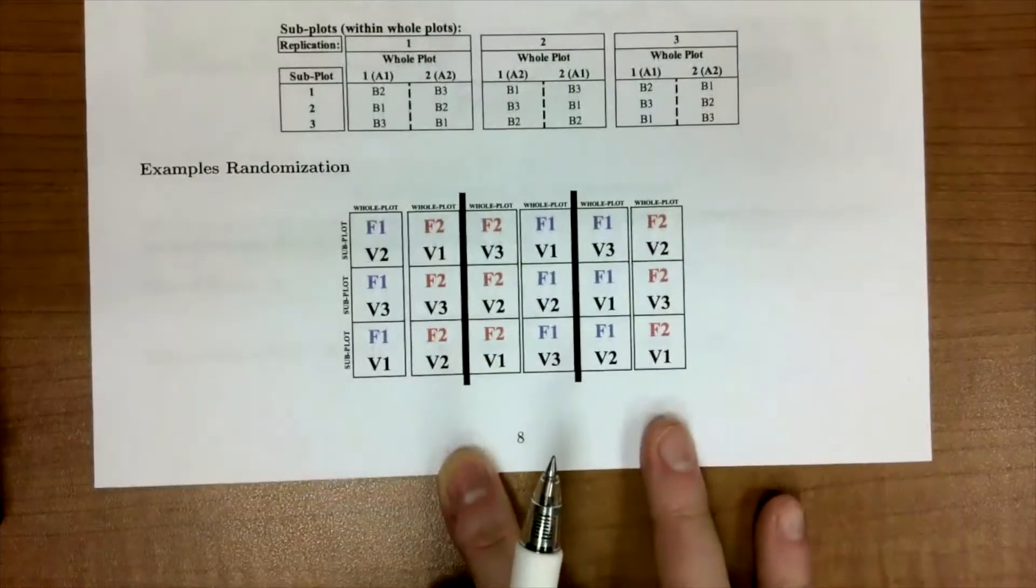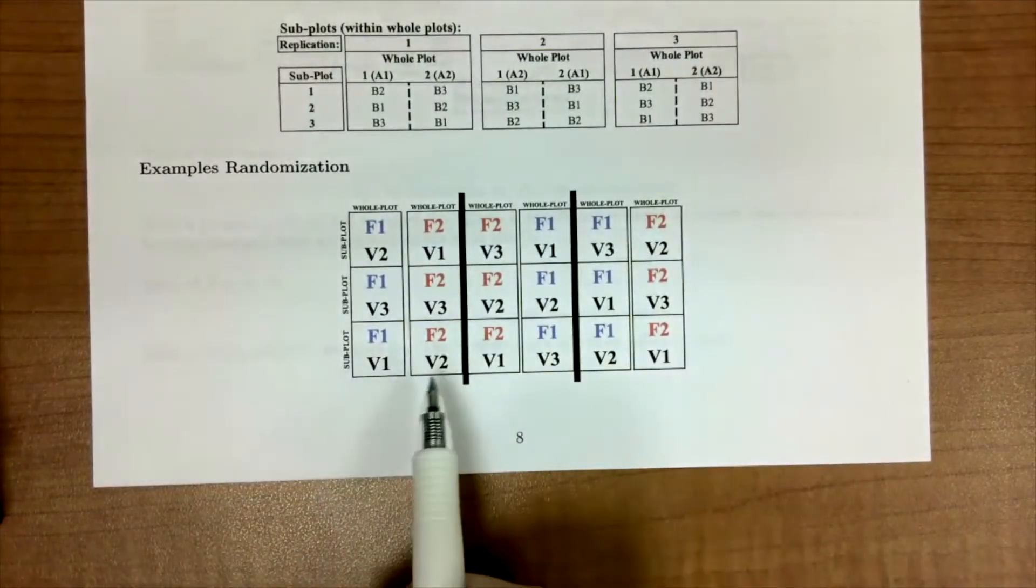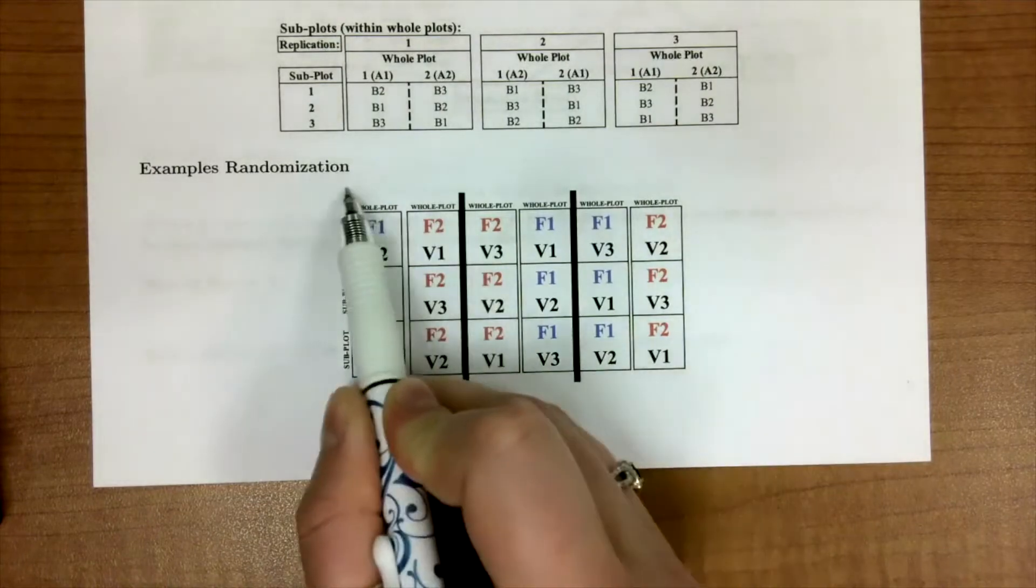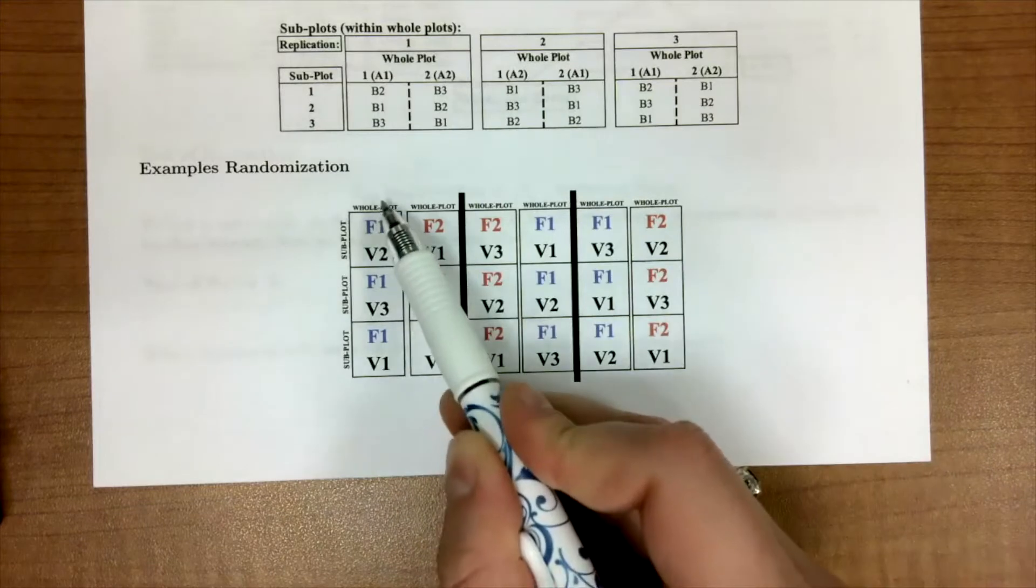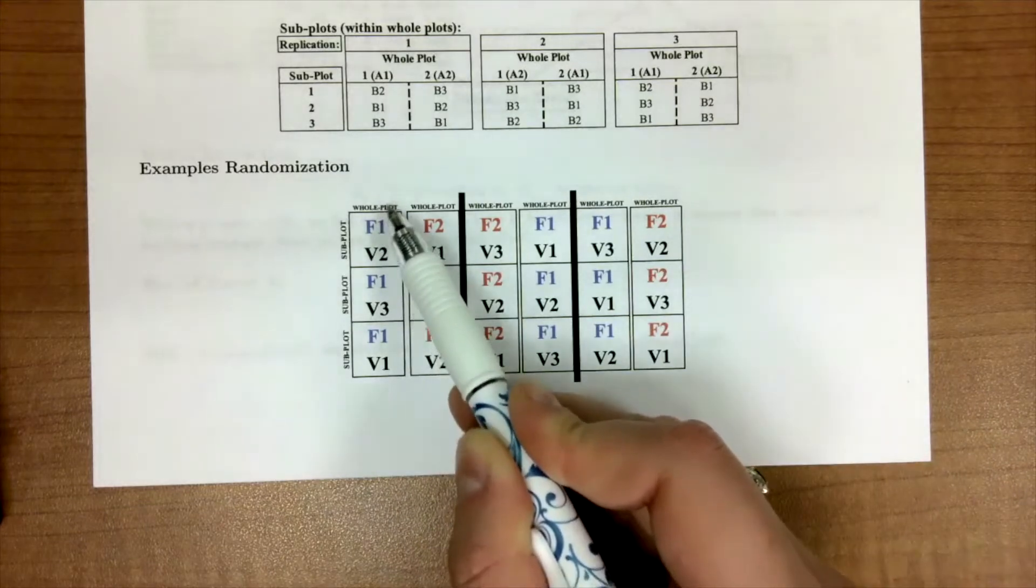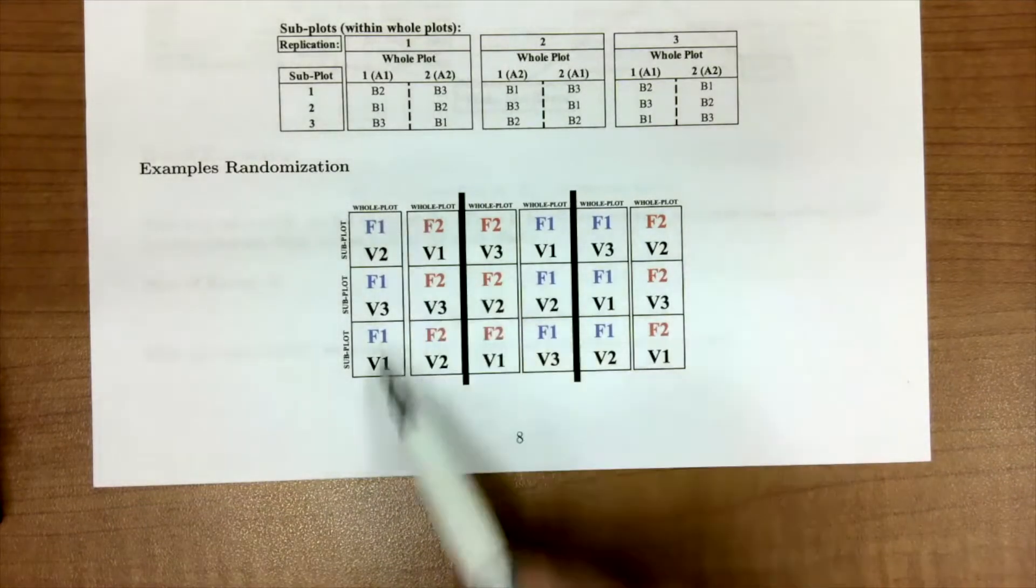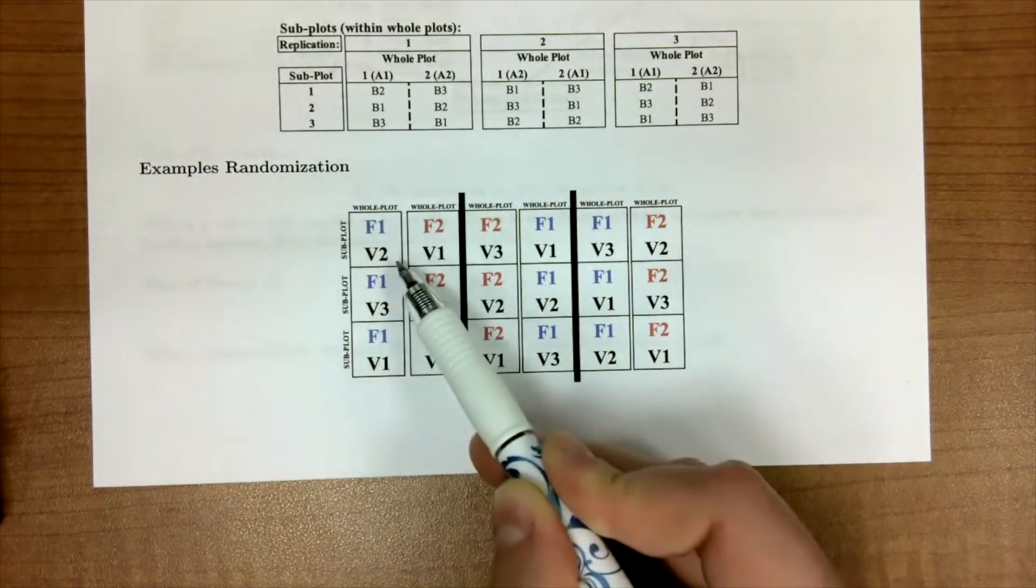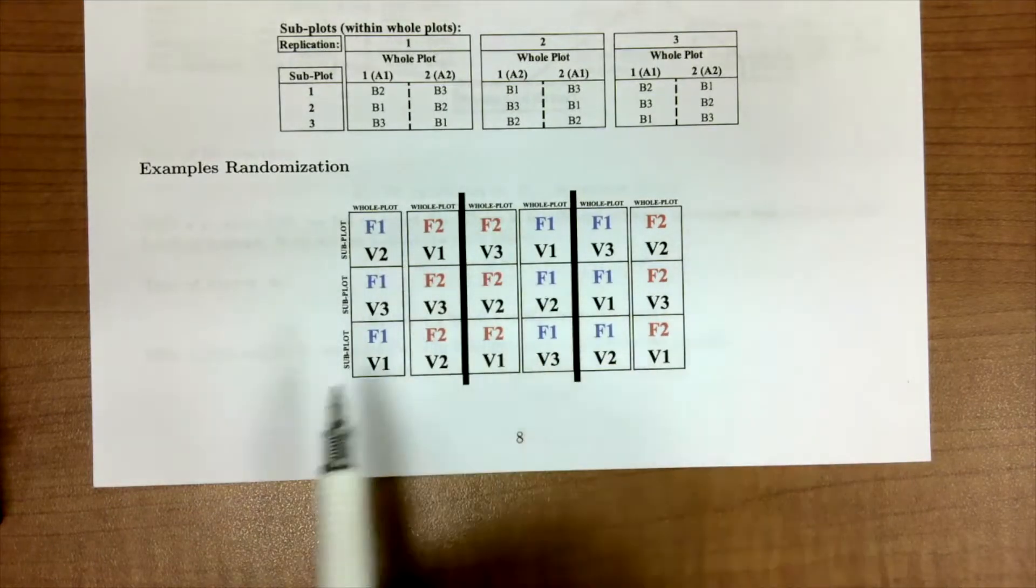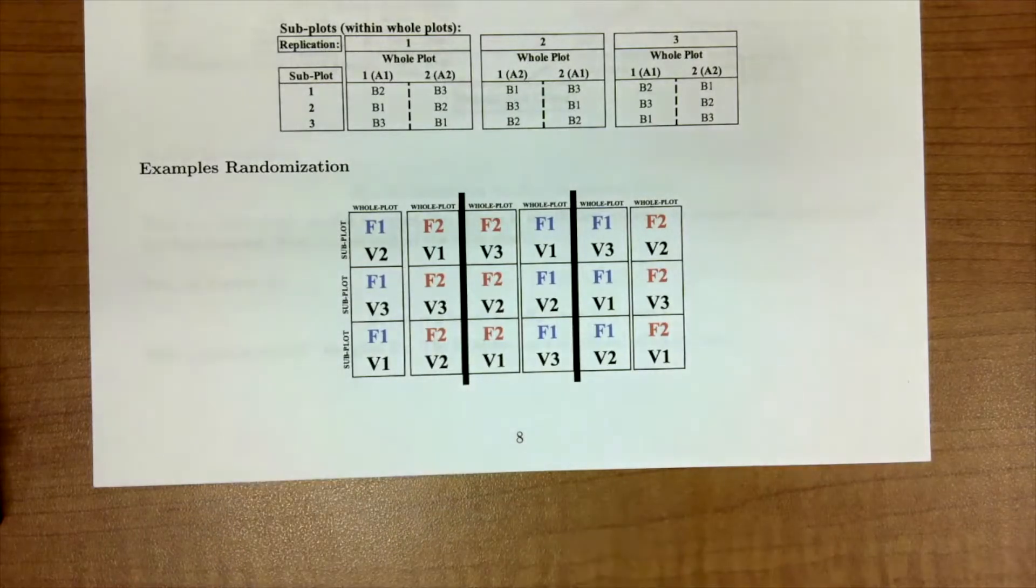Our randomization, for example, has been looking something like this where we have a block for farm one, block for farm two, block for farm three. We apply fertilizer one to a whole plot, then fertilizer two to the other plot, and then we apply our variety of soybeans. So at each farm we have a complete replication or complete set of treatments.